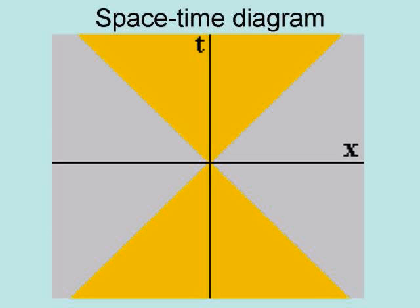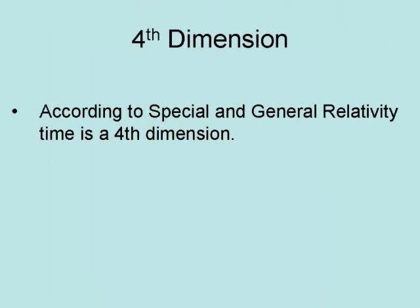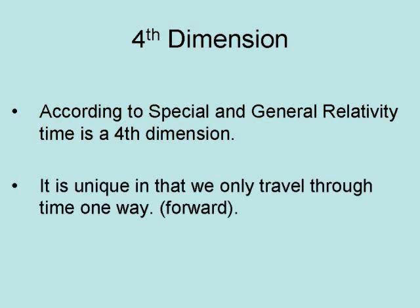A space-time diagram shows the relationship between space and time, where the x-axis equals space and the t-axis equals time. They show time as a fourth dimension. According to Special and General Relativity, time is a fourth dimension. It is unique in that we only travel through time one way: forward.